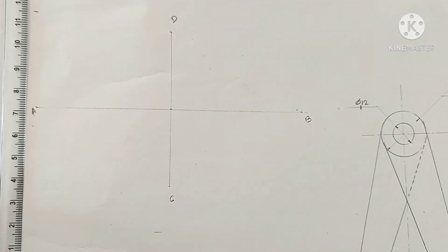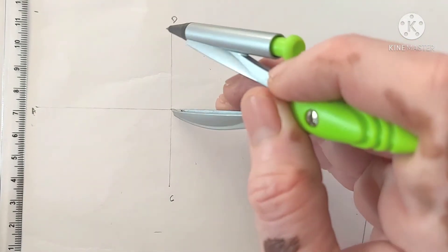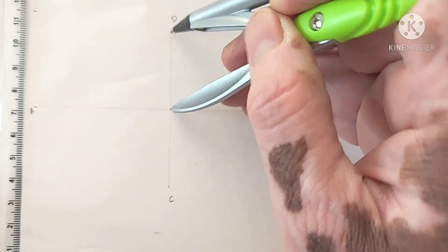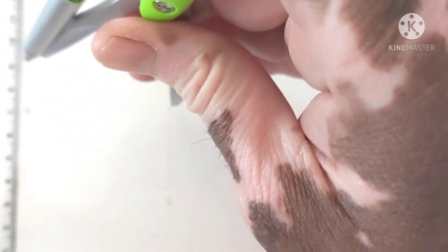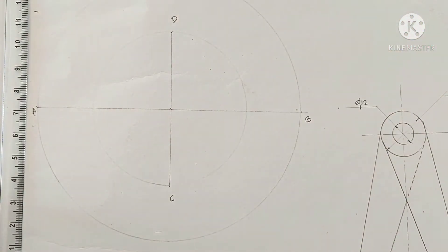Now, we have to draw an ellipse by concentric circle method. According to concentric circle method, we have to draw two circles, one radius equal to minor axis and another radius equal to major axis. Means diameter of the bigger circle equal to major axis and diameter of a smaller circle is equal to length of minor axis.